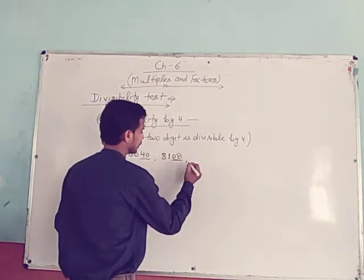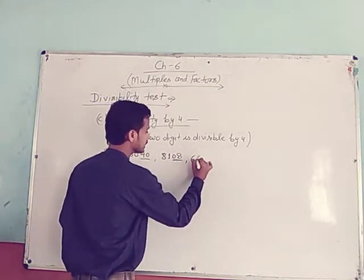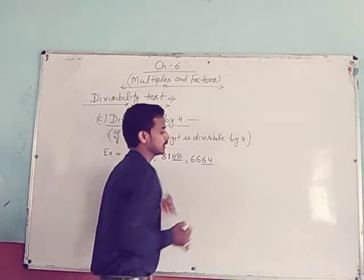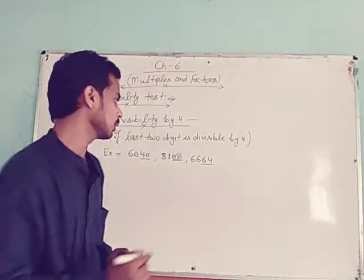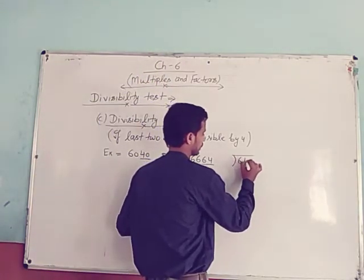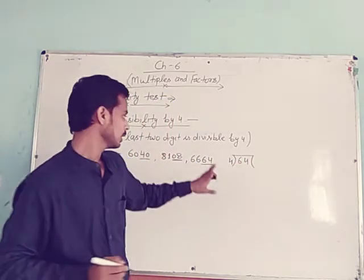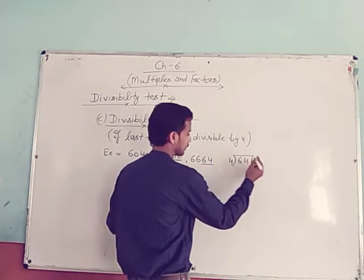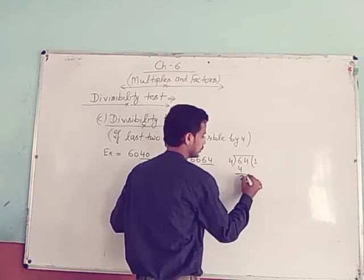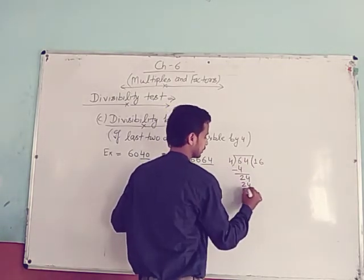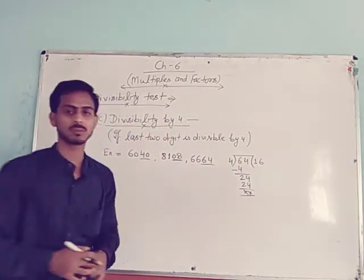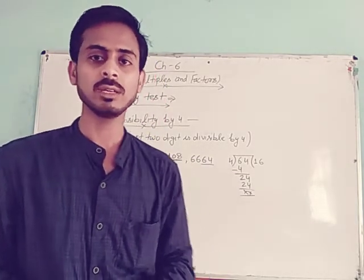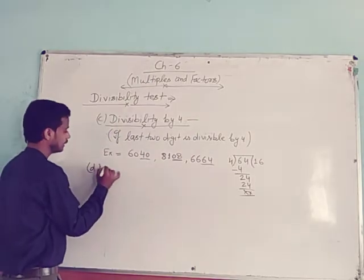Another example: 6664. The last two digits are 64. Divide 64 by 4: 4 × 16 = 64. So 6664 is also divisible by 4.